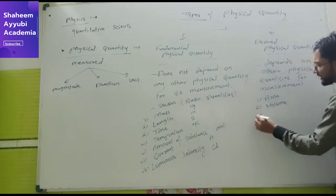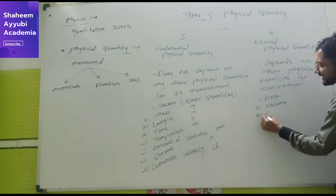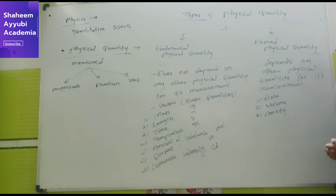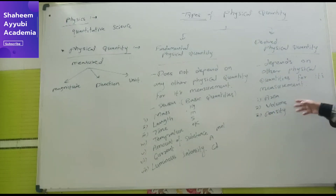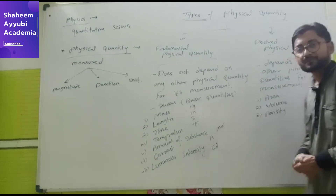Another example of a derived quantity is density. Density is mass divided by volume — mass over length cubed.